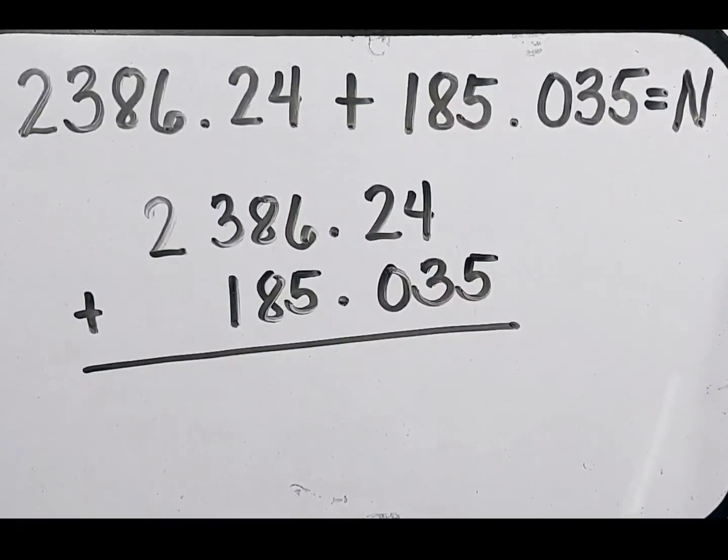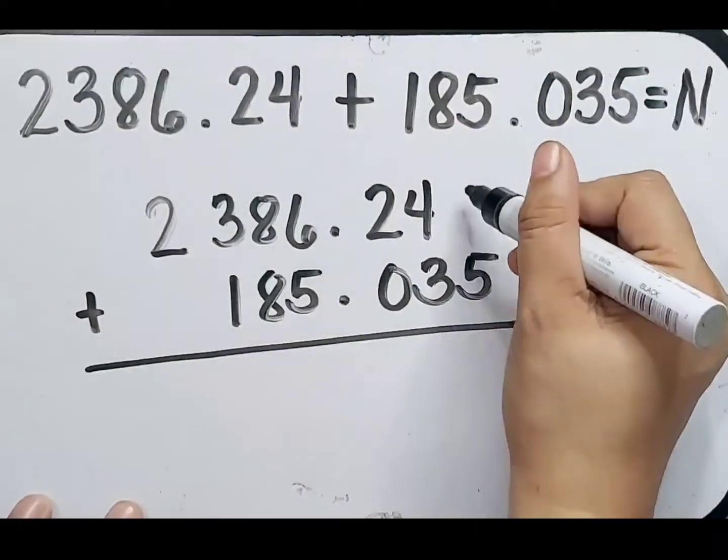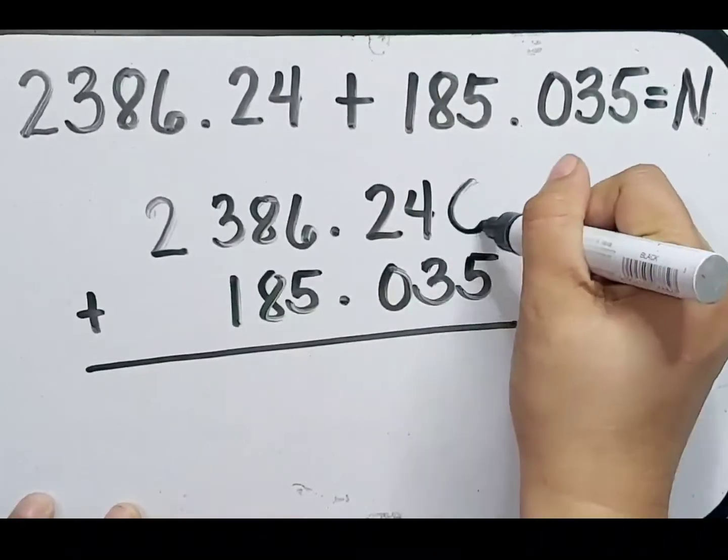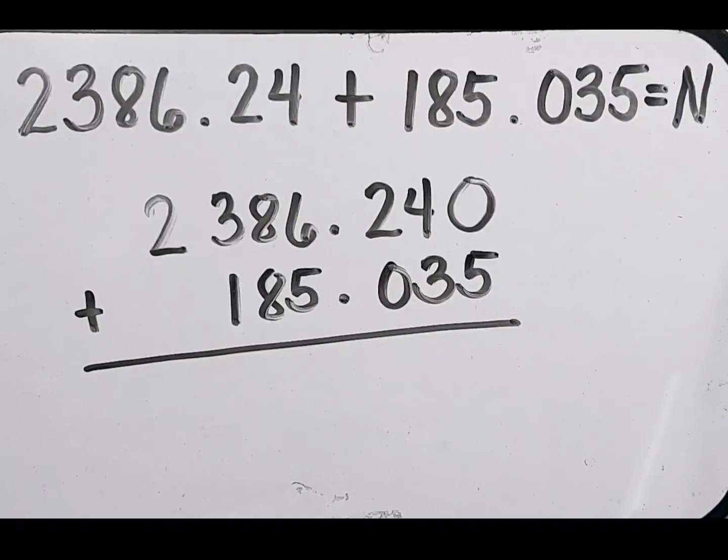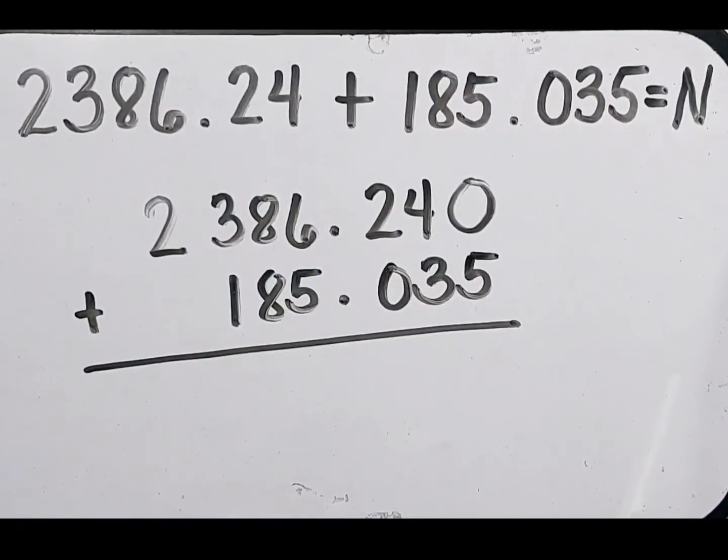Let's add one zero in our first addend so that the numbers of digits in the decimal place of our addends have the same length.